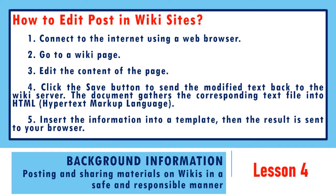Some wikis are available to the public. Every user has access to any content, anytime, and even anywhere in the world. The following are the steps on how to edit wiki content: First, connect to the internet using any web browser. Go to a wiki page. Edit the content of the page. Click the Save button to send the modified text back to the wiki server. The document gathers the corresponding text file into hypertext markup language or HTML. Insert the information into a template, then the result is sent to your browser.